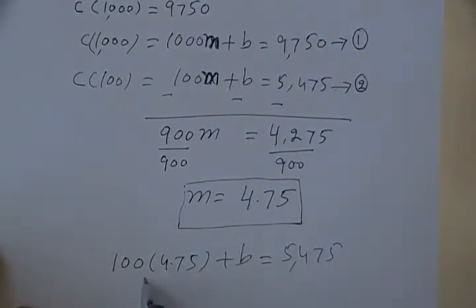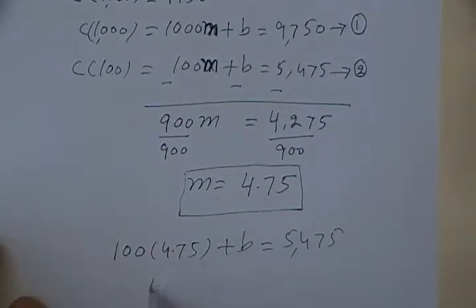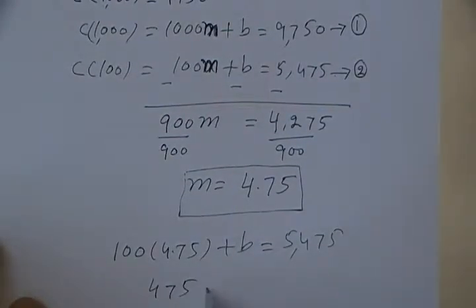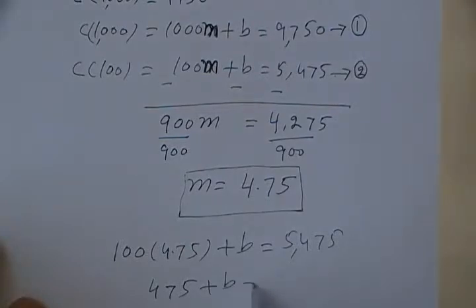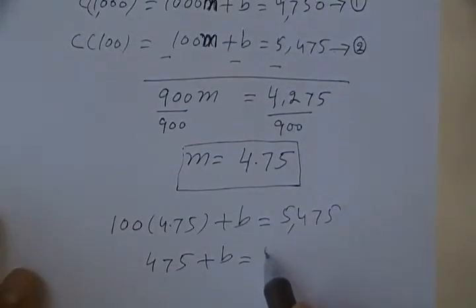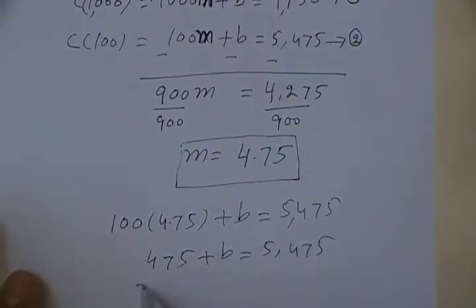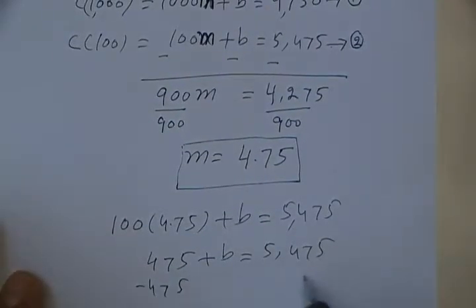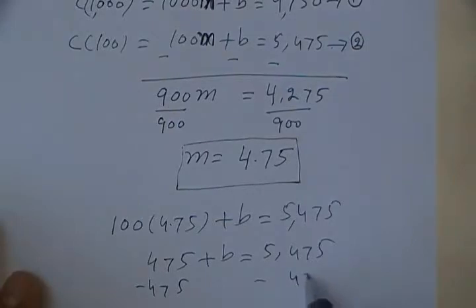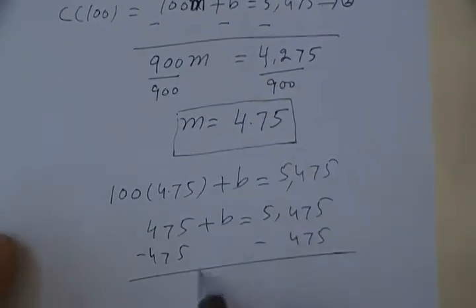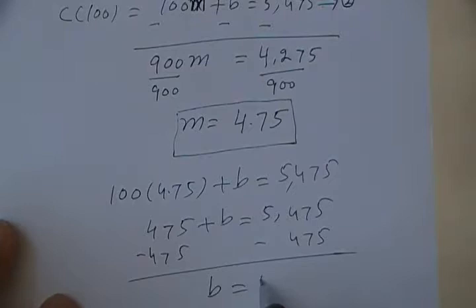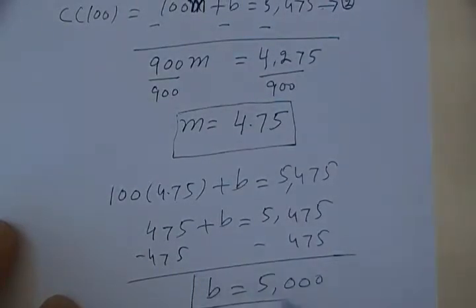That's 475 plus b equals 5,475. Subtracting 475 from both sides, b equals 5000. So this is b.